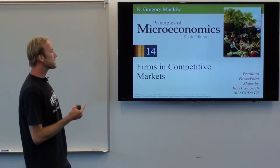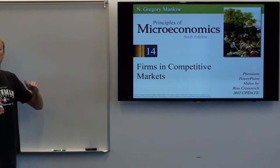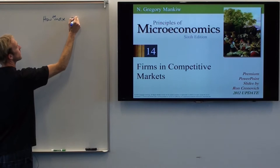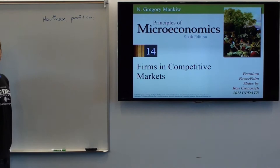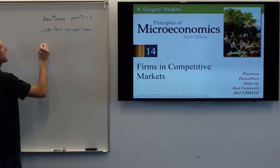Hello, everybody. Chapter 14. So this is the beginning of the end of the class. The last four chapters, we're going to learn four different things — basically how to maximize profit in four different types of companies. The first one we're going to talk about is perfect competition, or a perfectly competitive market.